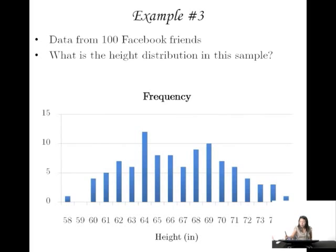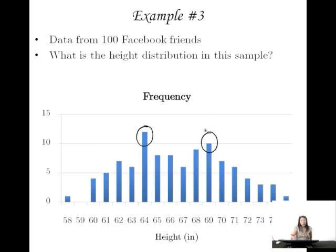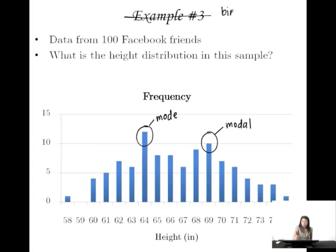Now let's move on to example three. We were interested in the height distribution in this sample. Compare this to our previous skewed distribution — is there a tail? Not really. But we do see a couple of places that are popular modes: 64 and 69 seem to be the popular peaks. Because we have one mode here and another mode here, this is a bimodal distribution.